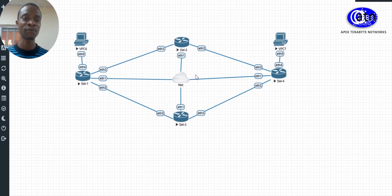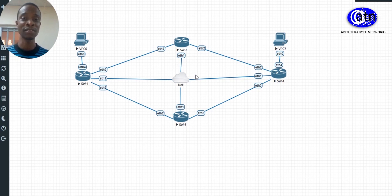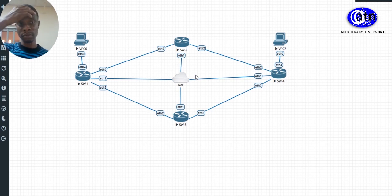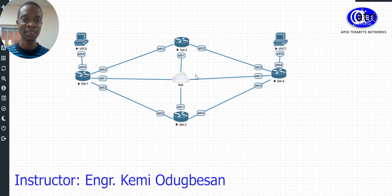But this particular video is not for a deep dive — just want to show you how you can configure it and get it working. For Rapid STP, there are only three states: learning, forwarding, and blocking. So there are only three states in RSTP and five states in STP.